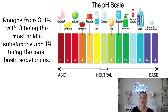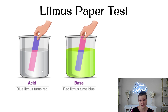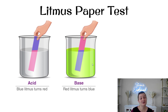A pH of 14 is a very strong base. Litmus paper is one way we can tell if something is an acid or a base. If you put blue litmus paper in a solution and it turns red — it honestly looks pink, but we call it red — it's going to be an acid. And if you put red litmus paper inside a solution and it turns blue, then it's a base.